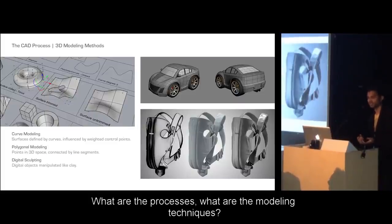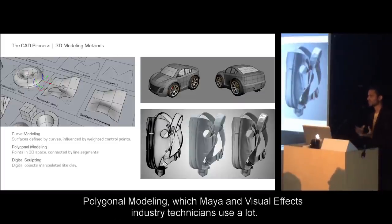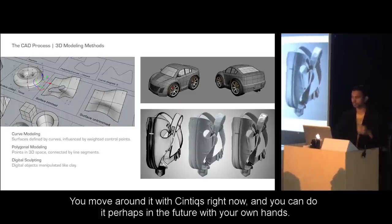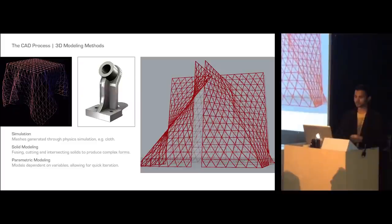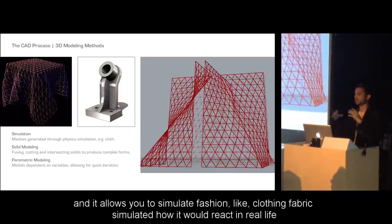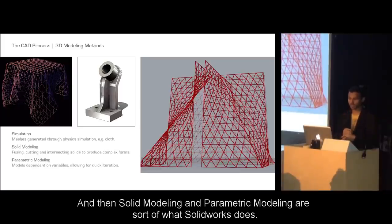What are the modeling techniques? There's solid modeling — what Rhino does — and polygon modeling used in Maya and the visual effects industry. Digital sculpting is like having clay in digital space, working around with a Cintiq tablet right now, and possibly with your own hands in the future. There's simulation software like Marvelous Designer that lets you simulate fabric and clothing to see how it reacts in real life, so you can evaluate design iterations without physical prototypes. And then solid modeling and parametric modeling are what SOLIDWORKS does.